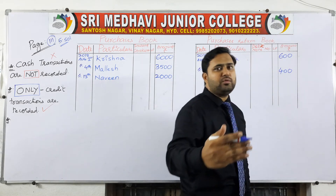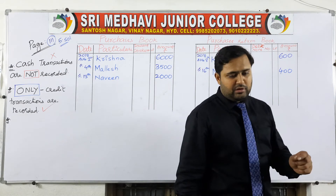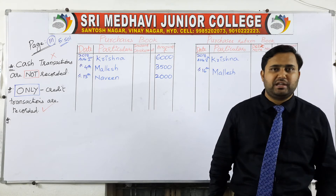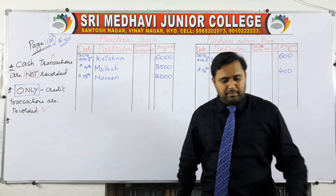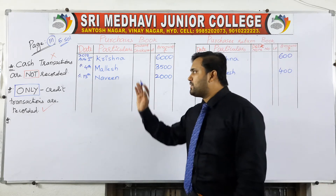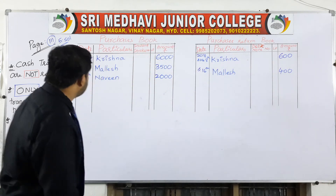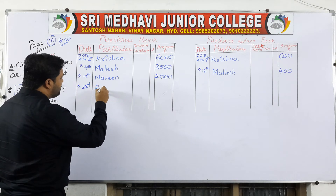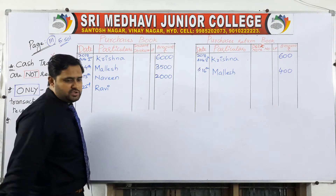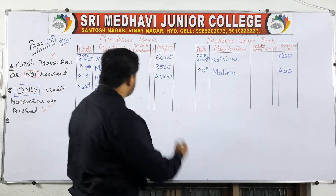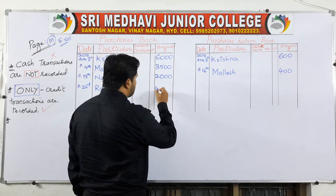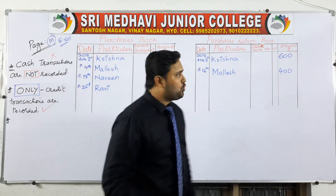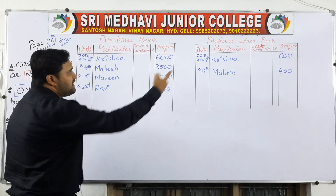You are returning goods worth 400 rupees to Mallesh. Then on 22nd August 2018, purchase goods from Ravi. Since this is a purchase, go to the purchase book and write the date 22nd August, party name Ravi, and the cost of goods is 4,000 rupees. That is where the question ends.